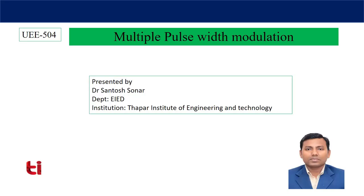Hi. Last class I discussed about single pulse width modulation technique. We understood that to eliminate a particular harmonic, there should be a particular pulse width. We saw that if the pulse width is 120 degrees, then the third harmonic can be eliminated from the output voltage. Based on that, today we will discuss multiple pulse width modulation. Let us start.